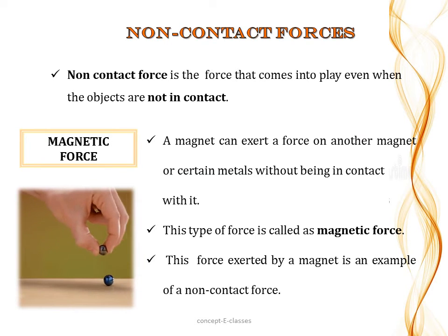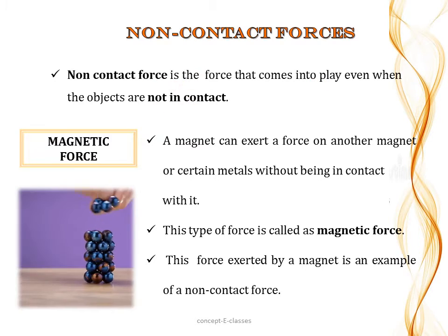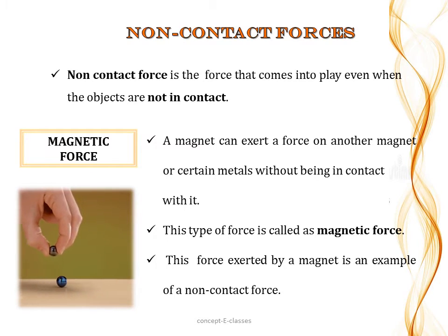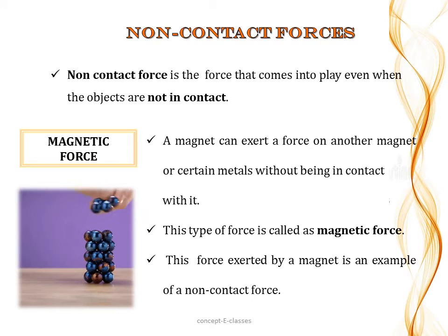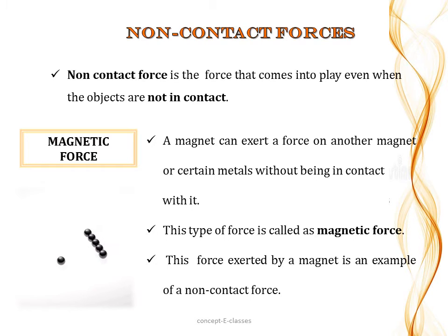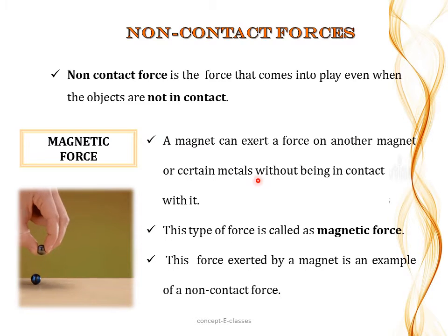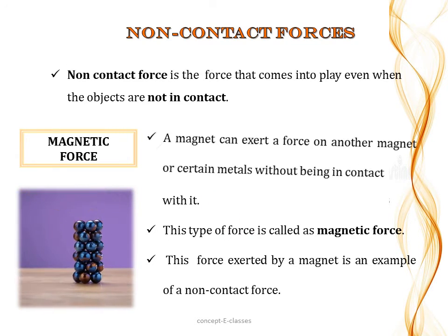A non-contact force is a force that comes into play when objects are not in contact. The first type is magnetic force. Two magnets either repel or attract each other, and certain objects brought near a magnet will move toward it. A magnet can exert force on another magnet or certain metals without being in contact with them. Therefore, magnetic force is an example of a non-contact force.